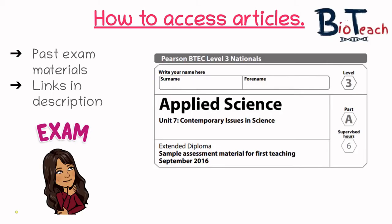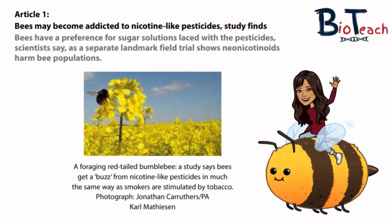I've got some practice articles you can look at to start your question one. There are past exam materials on the BTEC website, though some are locked — you can ask your teachers to print them or give you access on Moodle or Google Classroom. I have a sample assessment material from 2016 shared on my test shop, with the link in the description. That sample material looks at the scientific issue of pesticides and insecticides and their effect on bee populations. Article one shows a bee in a rapeseed field and discusses how bees may become addicted to nicotine-like pesticides and their preference for sugar solutions laced with pesticides.